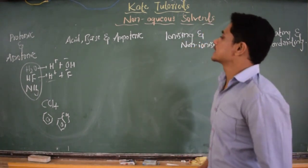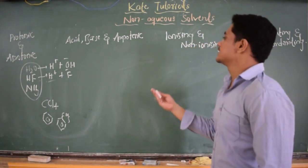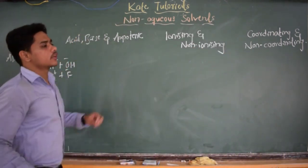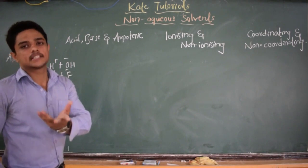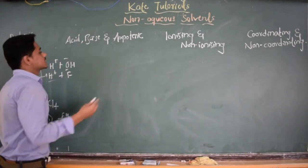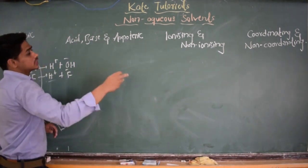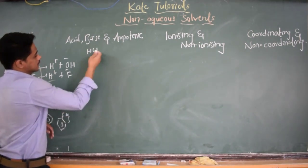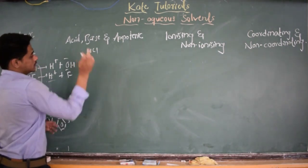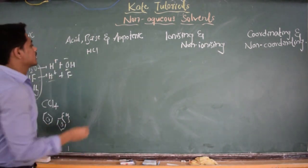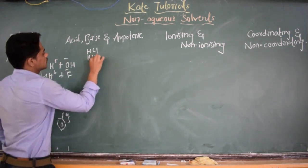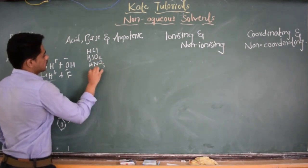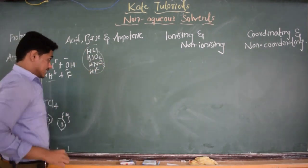The next classification is acid, base, and amphoteric solvents. The acid solvent is one which gives H⁺ ion. For example, HCl can act as a solvent and is an acidic solvent. H₂SO₄, HIO₃, and HF all come under acidic solvents.